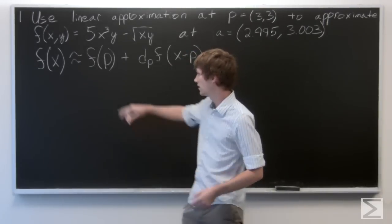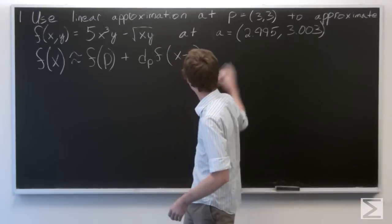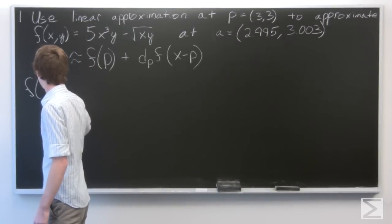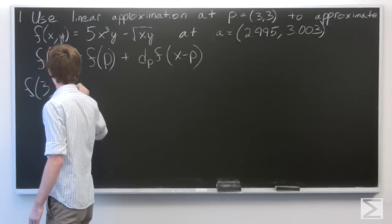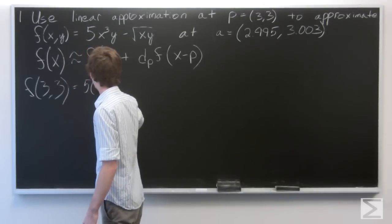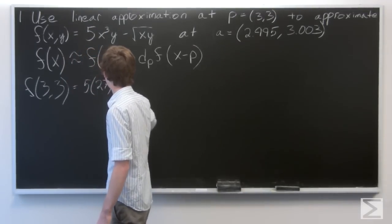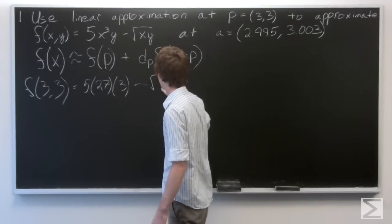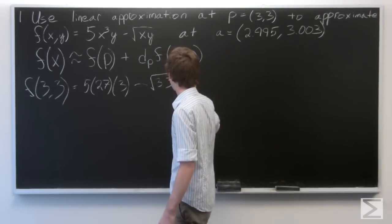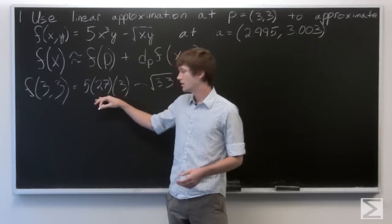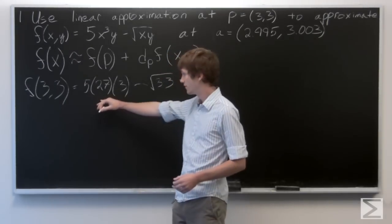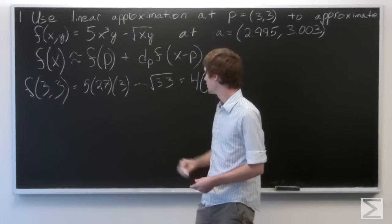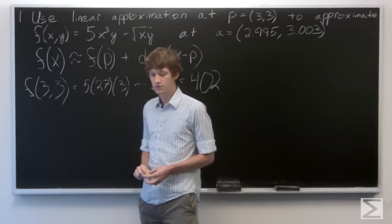First, we'll calculate f of p for p equal to (3, 3). This quantity is 405 minus 3, so f(3, 3) is equal to 402.